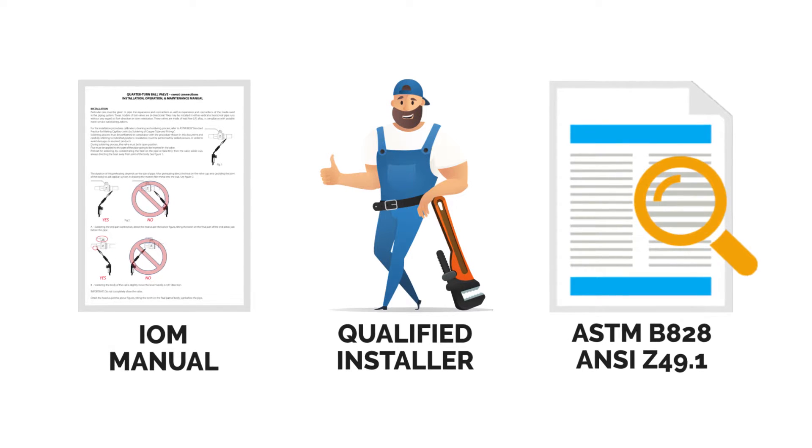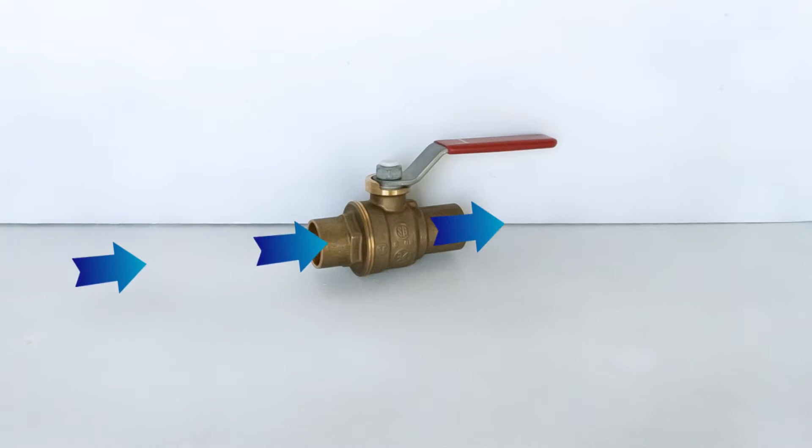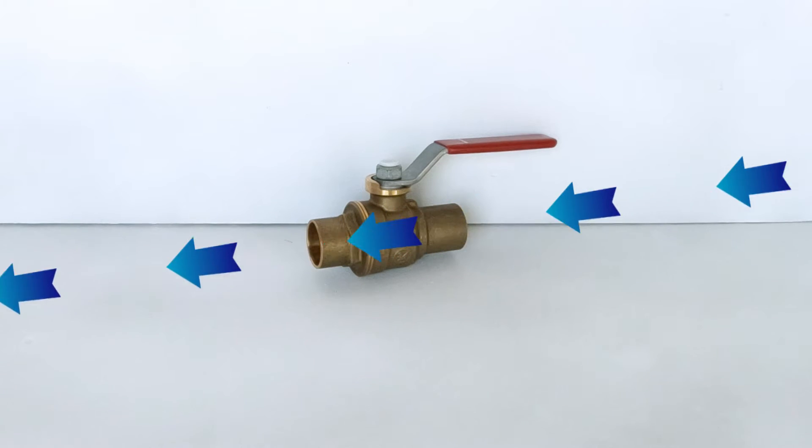Now before getting started, here is some practical information for understanding the valve you are going to install. The valve is bi-directional. This means fluid can flow either from left to right or from right to left regardless of installed position.